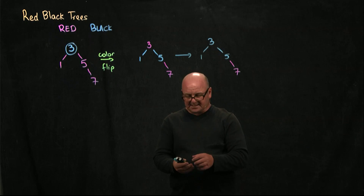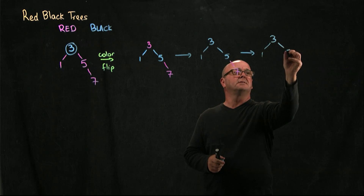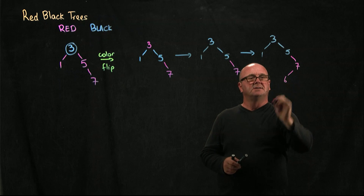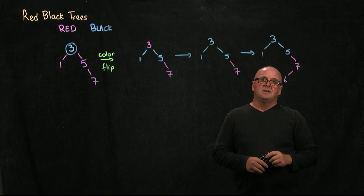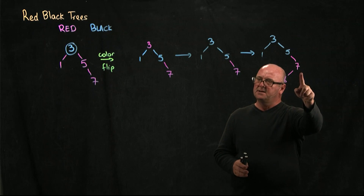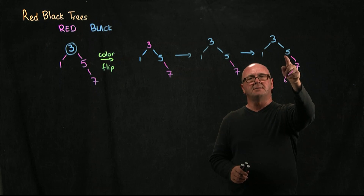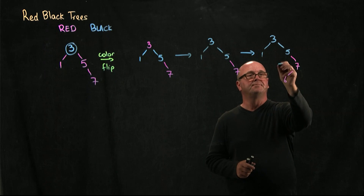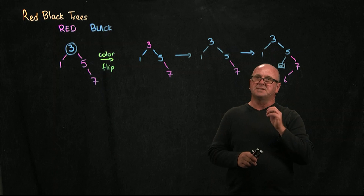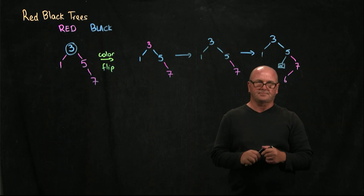Let's add a 6 to our tree. 6 is bigger than 3, bigger than 5, smaller than 7, so 6 comes down here. Is this a valid red-black tree? No, because we've got two consecutive red nodes. How do we fix it? We have to figure out what the aunt is. The 6 is the node we added, the 7 is the parent, the 5 is the grandparent, and the null down here is the 6's aunt. Remember, nulls are black. So we have a black aunt — black aunt means rotate.